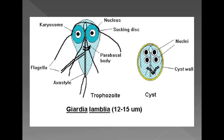The trophozoite of Giardia lamblia has the old man appearance or teardrop shape — pear-shaped. It has one pair of nuclei, one pair of sucking discs around the nuclei which help the parasite adhere to the intestine, and four pairs of flagella for its motility. There is also one pair of parabasal bodies and one axostyle running from between the sucking discs to the tip of the parasite.